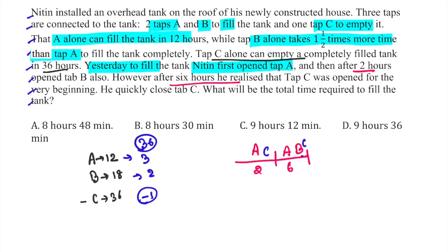beginning, then we close tap C. So I'm repeating: we started with A, then we opened B after 2 hours, and after 6 hours we realized we had C open already, then we suddenly closed C. Now we have A and B open.